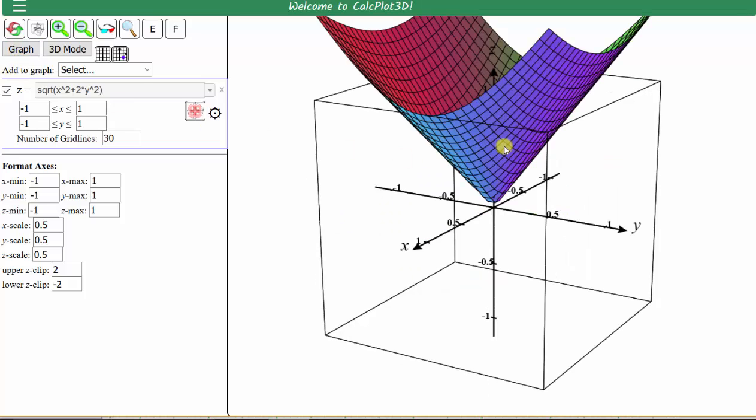This is the graph of the surface. To graph the contour plot or level curves, we click on this button here, which is draw a contour plot.